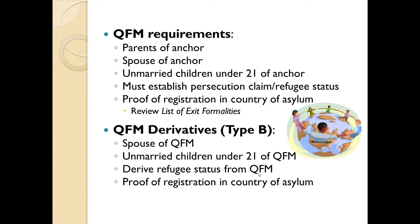Qualified family member requirements: they can be the parents of the anchor, the spouse, or unmarried children under 21 of the anchor. However, all qualified family members must establish their own persecution claim or have refugee status. This is a new requirement: they must also be able to show proof of registration in their country of asylum. The same applies to derivatives — all beneficiaries listed on the AOR must show proof of registration in the country of asylum.